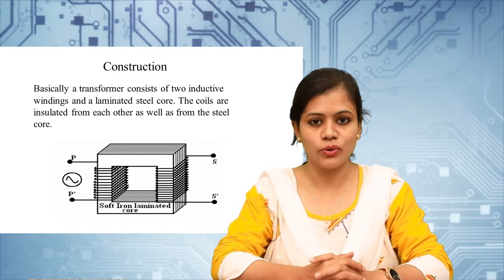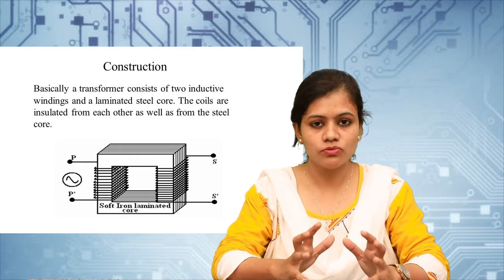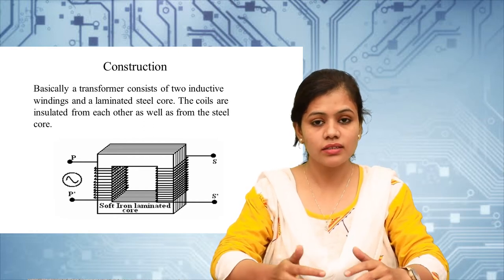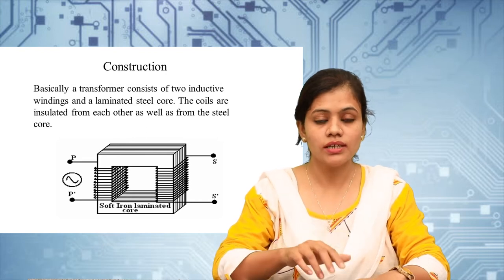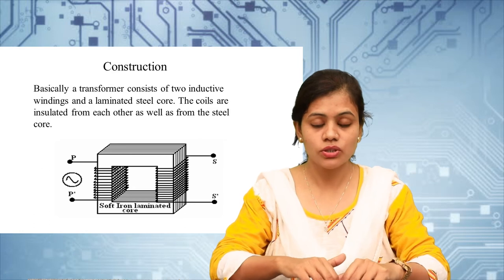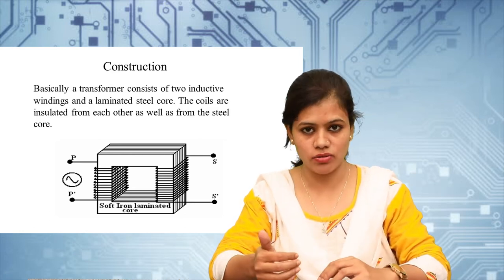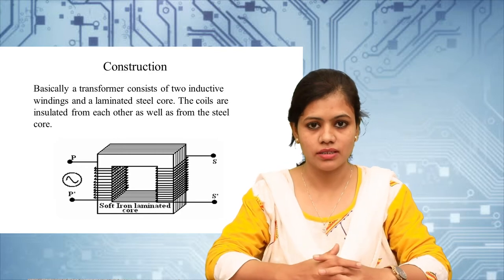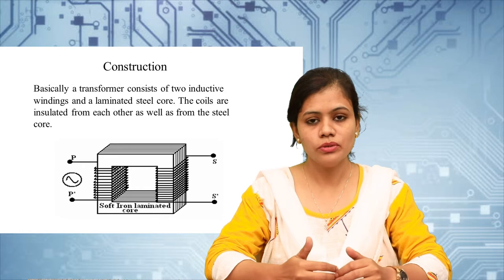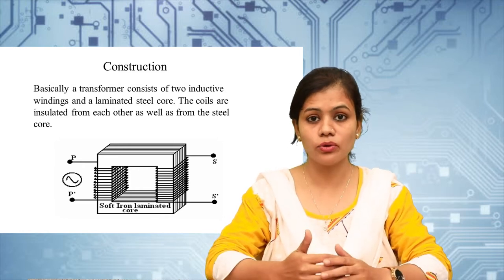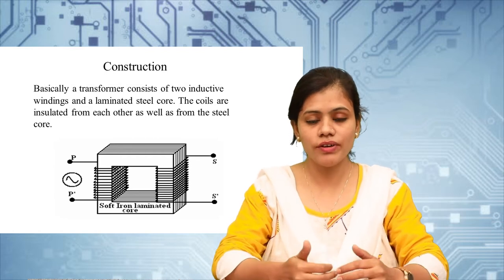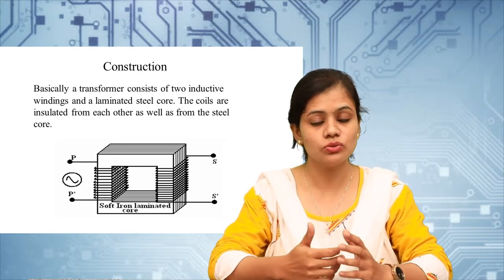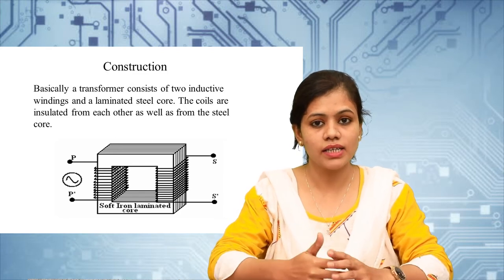Next is the magnetic core. The magnetic core in a transformer looks like a rectangle as shown in the figure. The main function of the core is to provide a path for the passing flux. When the maximum flux passes through this core, two types of losses occur inside the core — hysteresis losses and eddy current losses. To minimize these losses, the core is made up of high-grade silicon steel, because this material has high permeability.